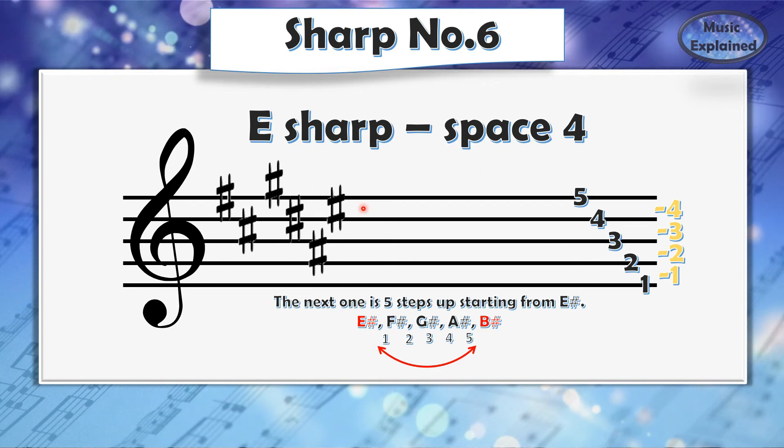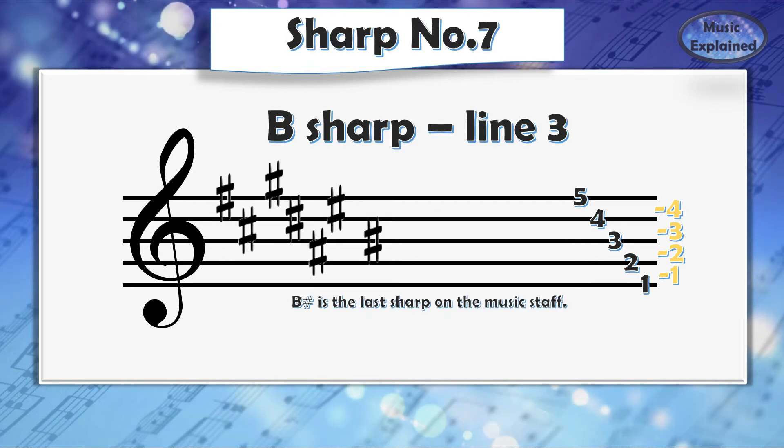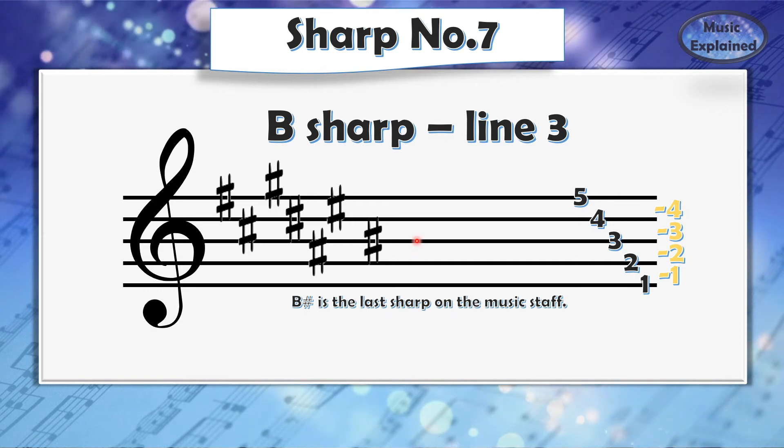A-sharp is on the second space. E-sharp is on space number four. And the last one, sharp number seven, B-sharp is on line number three.